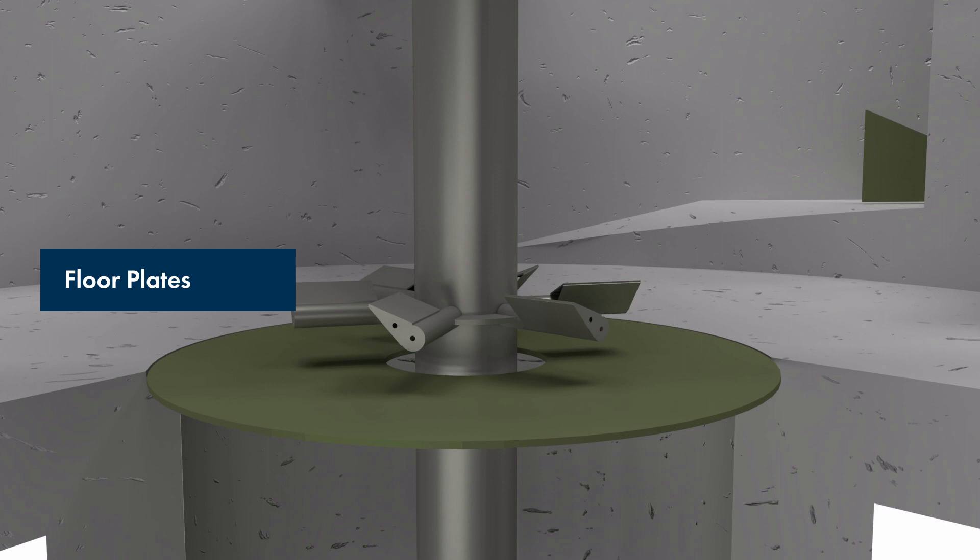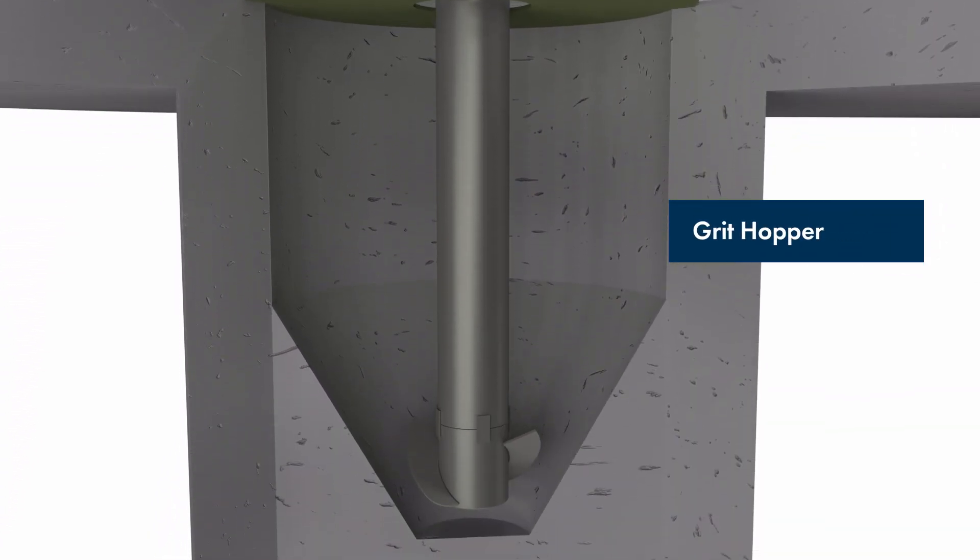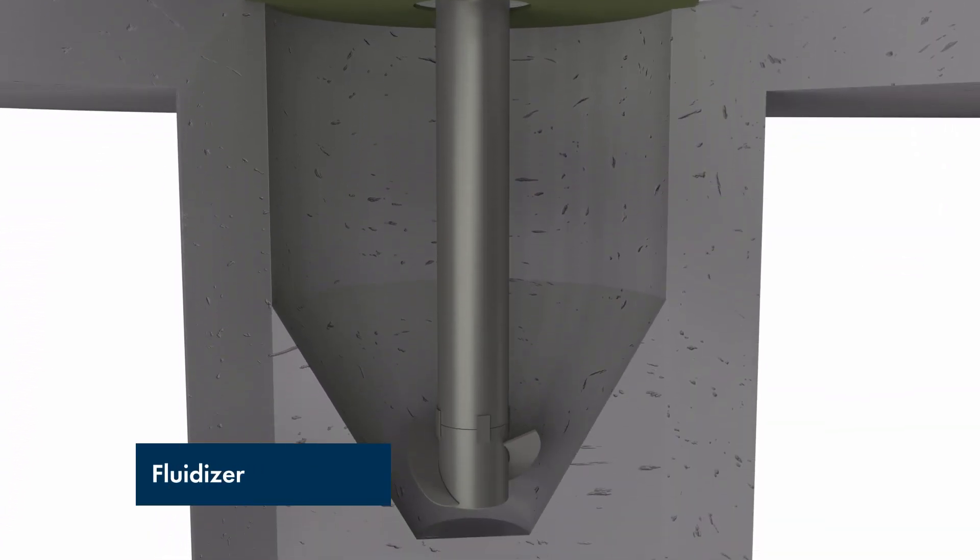The removable floor plates provide a flat floor for grit travel and easy access for maintenance. The grit hopper collects the grit. The fluidizer keeps the grit in constant motion to prevent packing.